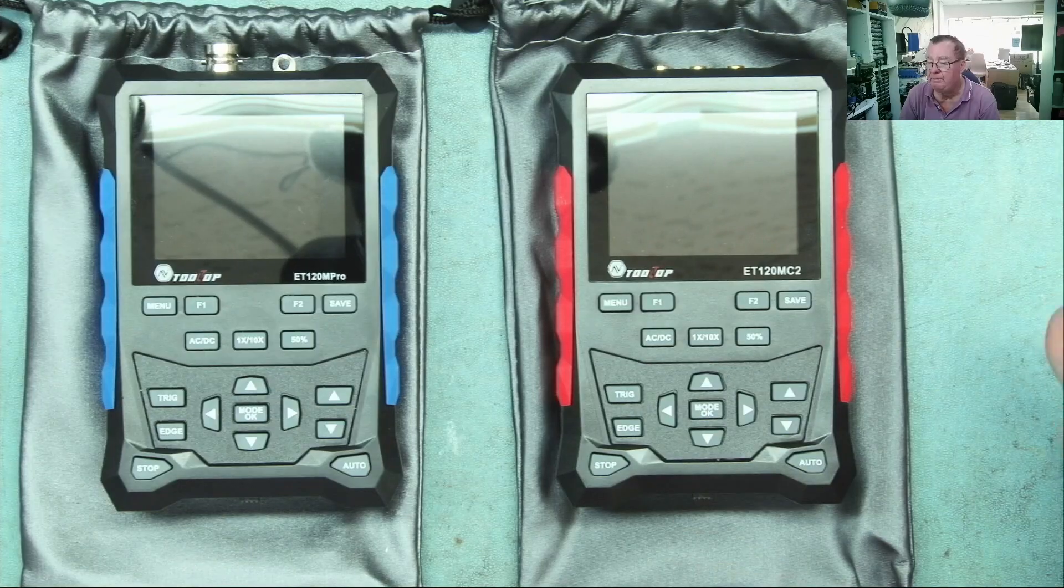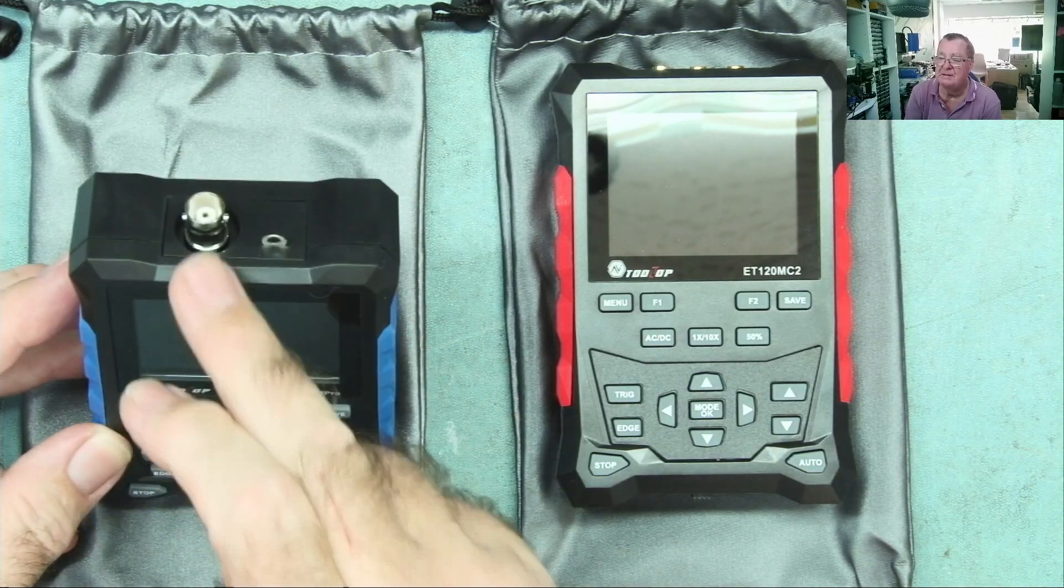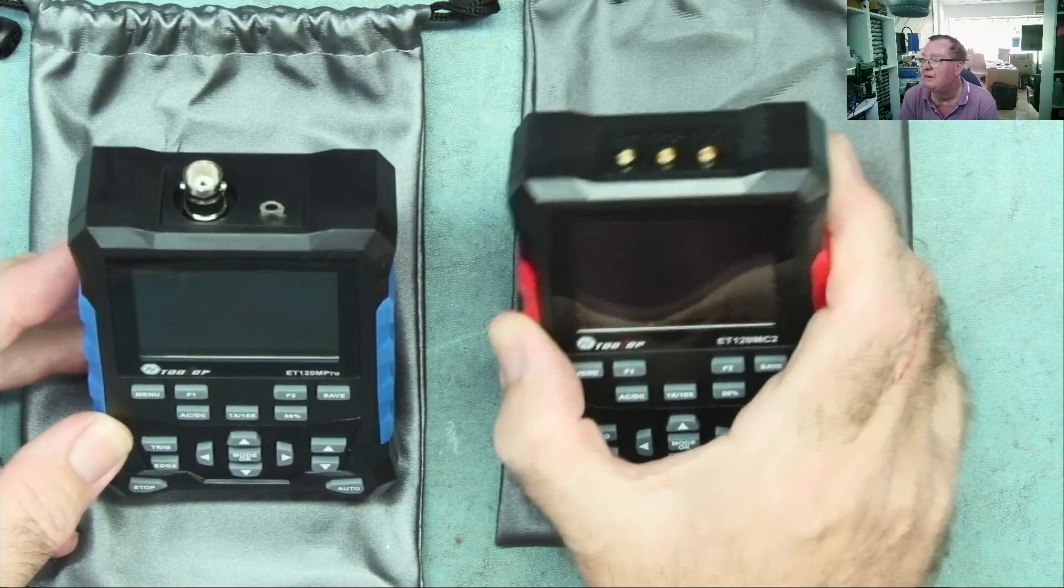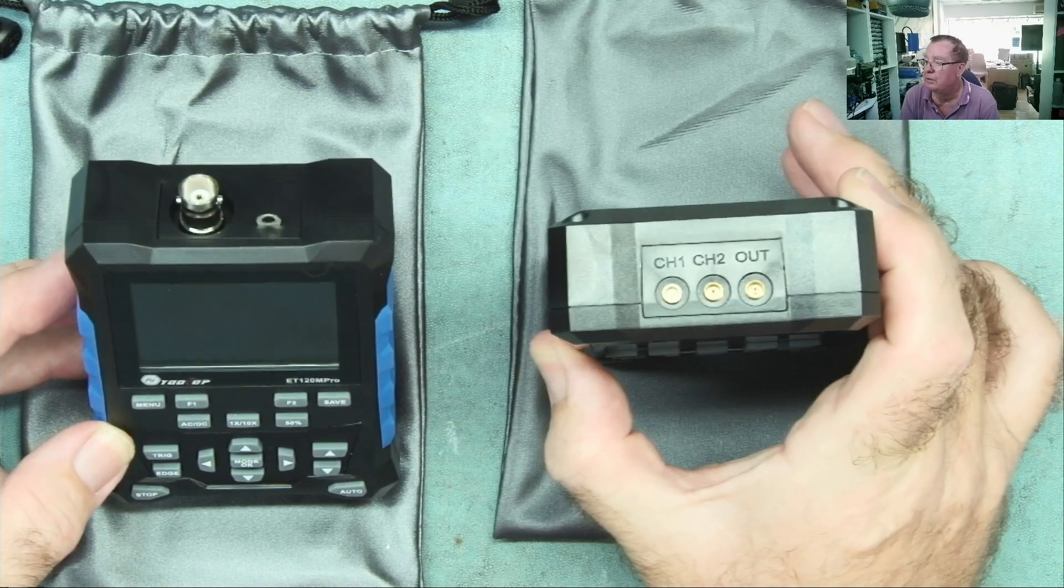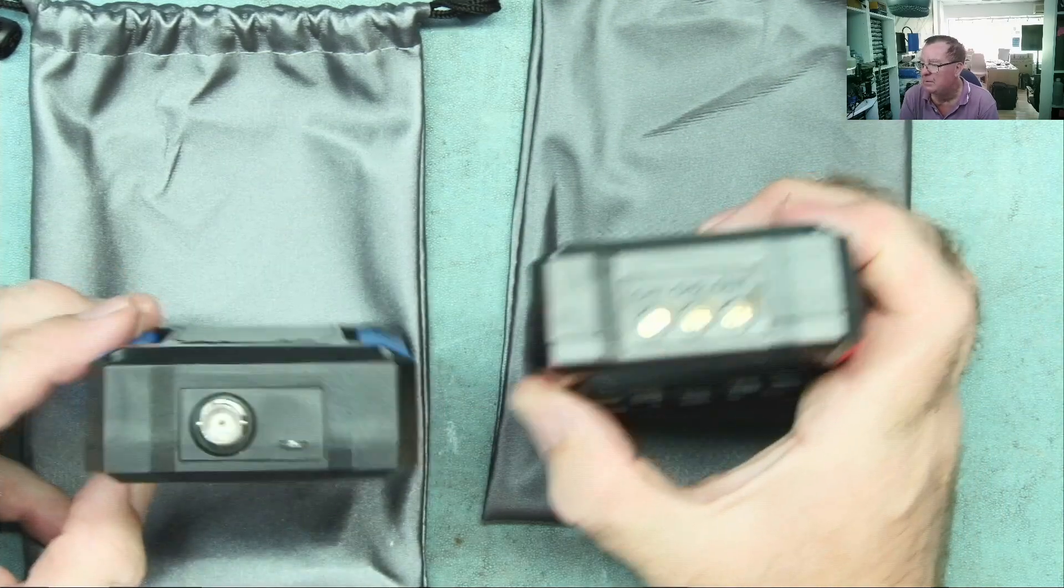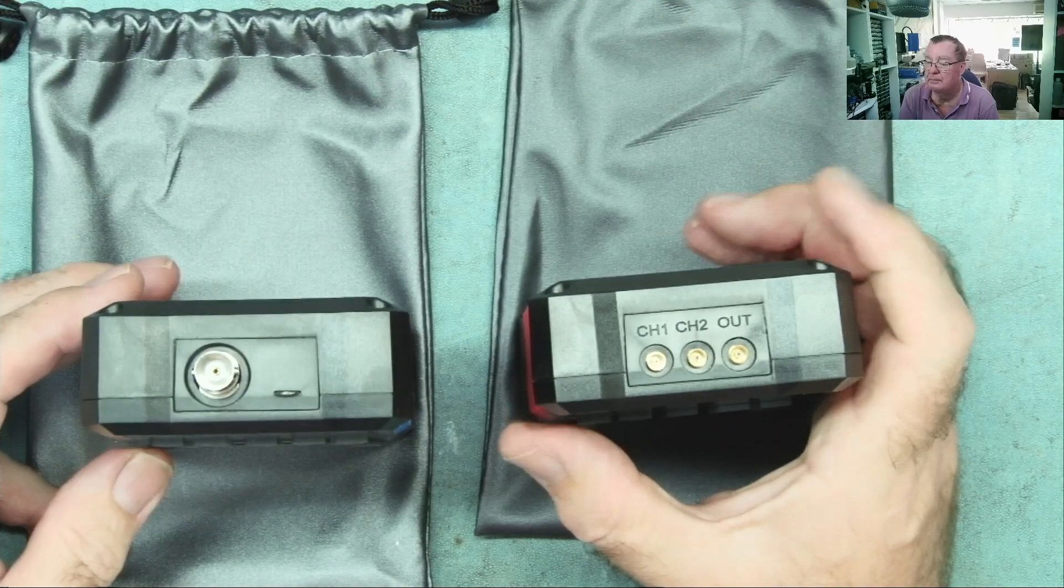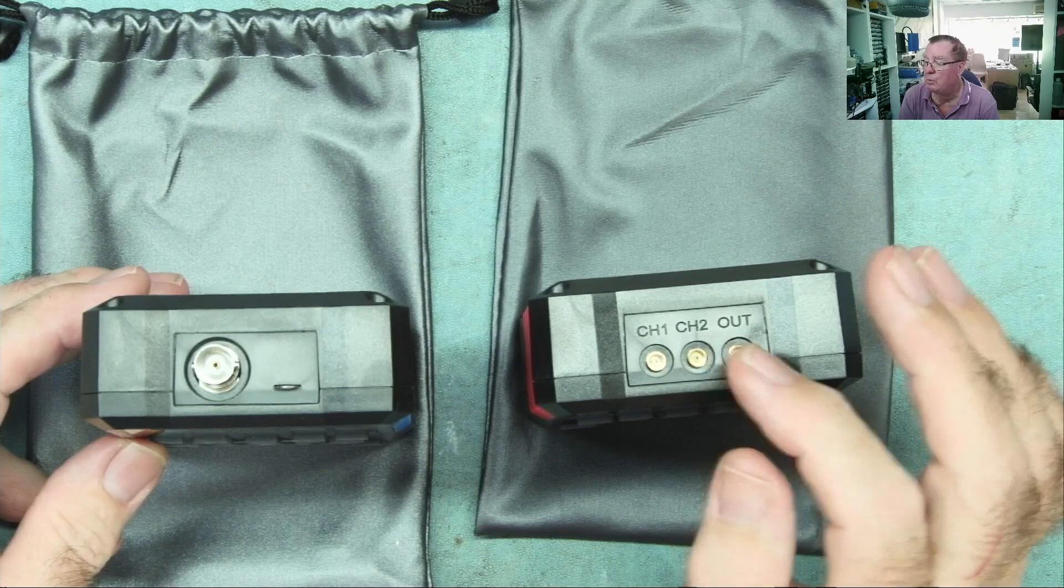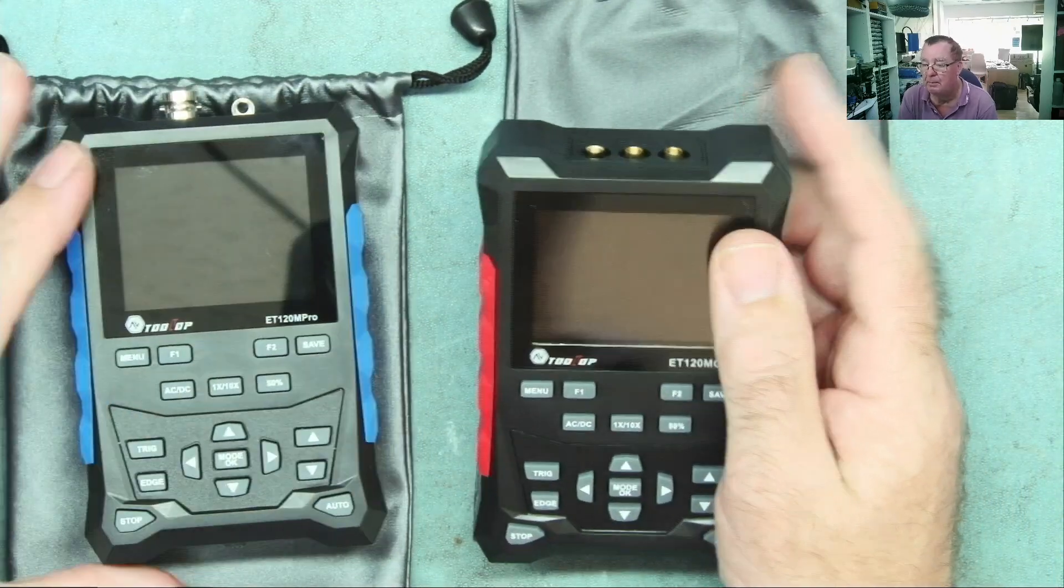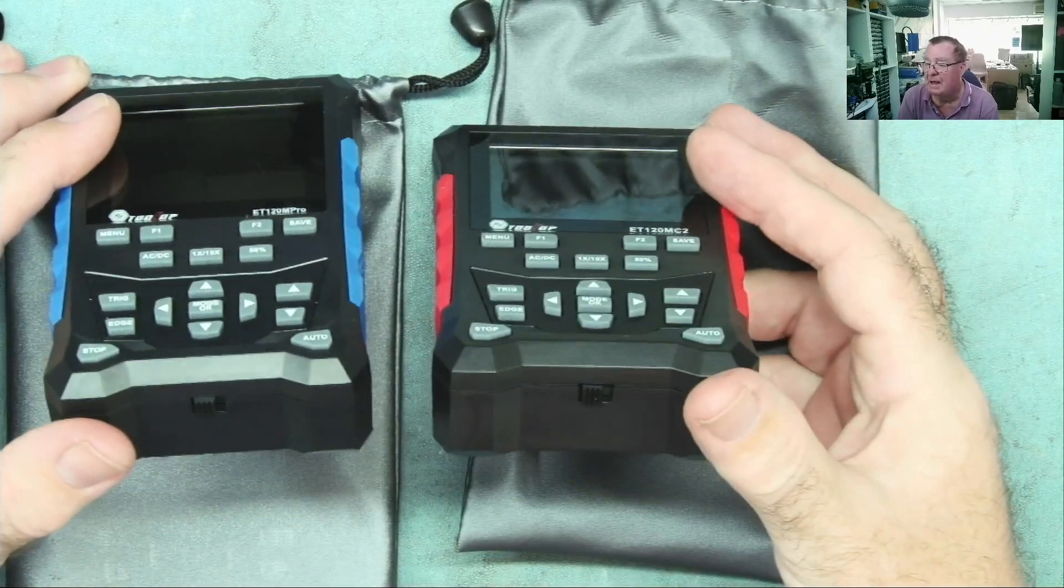USB-C charging lead, ubiquitous these days. The first difference I noticed is this has a standard BNC, whereas this has three of these little connectors. I'm not totally sure what you call them, it's a bit like an SMA type connector. This has channel one, channel two, and output, so you can connect three leads onto that one.